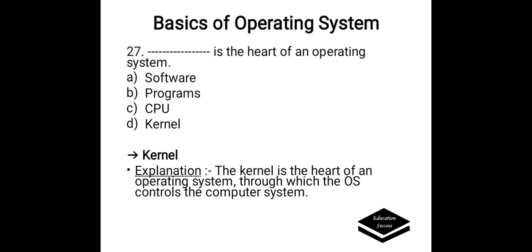___ is the heart of an operating system. Options are A. Software, B. Program, C. CPU, D. Kernel. Correct answer is D, Kernel. Kernel is the heart of the operating system.